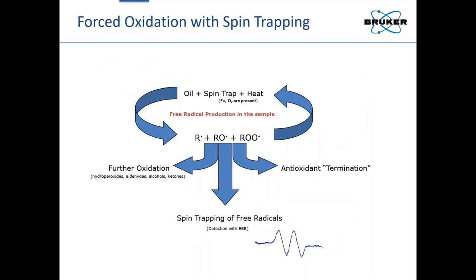These free radicals as they form are really unstable — they have half-lives on the order of milliseconds. So one thing we have to do with this forced oxidation test is to add a spin trap. It's basically a molecule that is not itself a free radical, but when free radicals form during oxidation, the spin trap will trap the radical and maintain an unpaired electron in a much more stable form. We can then measure that and use it as a marker of ongoing oxidation. So we have a reaction going where we're heating the sample, with iron, oxygen, and antioxidants present, and now an agent that can trap radicals and monitor how well the material is performing.